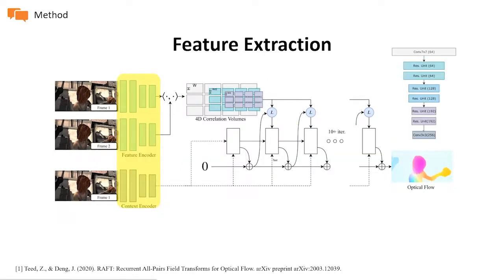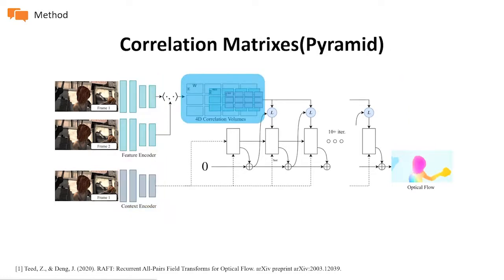For the feature encoder, it is just stacks of residual blocks. Note that we use a separate encoder for context encoding and for visual similarity computing. After feature extraction, we have our correlation pyramid, which is basically stacks of 4D correlation volumes at each scale.